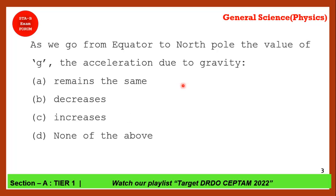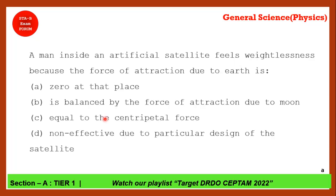As we go from equator to the north pole, what happens to the value of g — acceleration due to gravity? We have seen that gravitational force is maximum at the pole and minimum at the equator. So as we go from equator to pole, g increases. Option 3 is the correct answer.